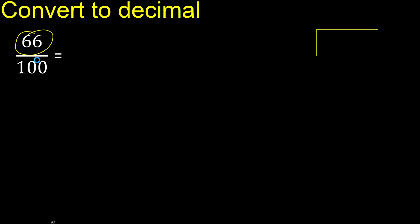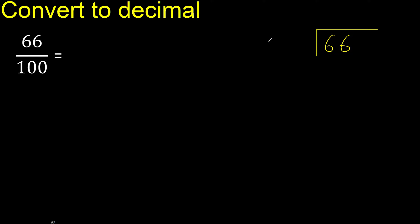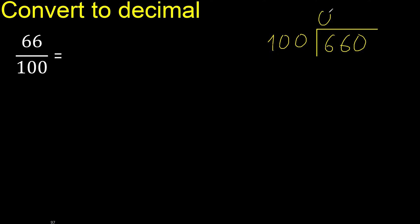66 divided by 100. 66 is less, therefore complete — always complete with 0. Here: 0 point.